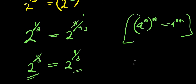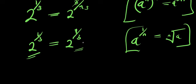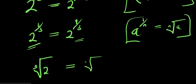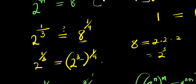You can further simplify this using the identity a to the power of 1 over n equals the nth root of a. Applying this, both sides equal the cube root of 2. So t equals 1 over 9 has also satisfied the equation, and that is it.